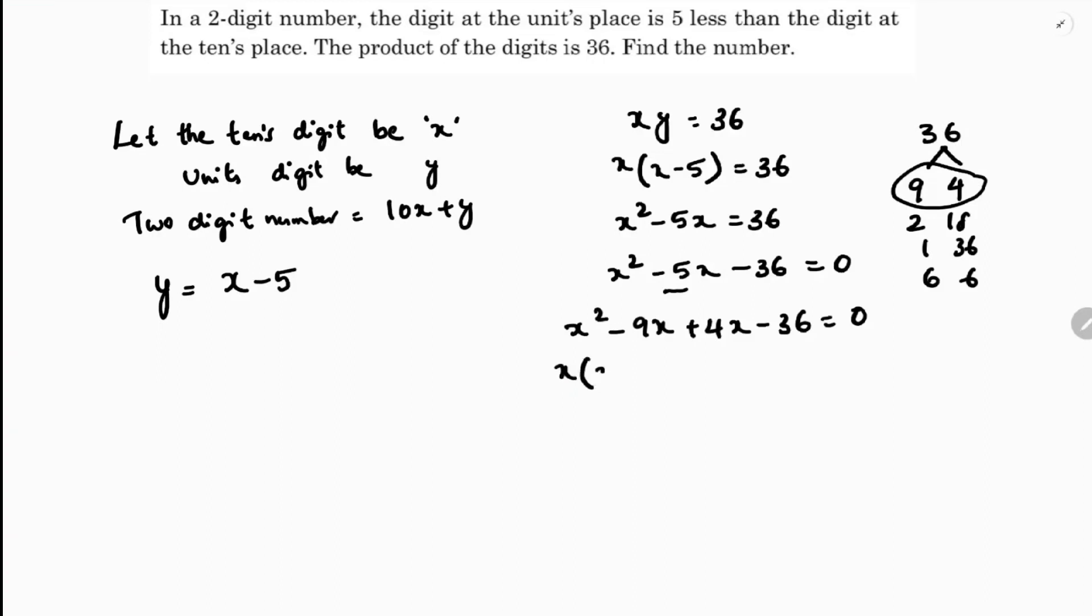If you take x common in the first two terms, x into x minus 9 plus 4 into x minus 9. x plus 4 equals 0, x minus 9 equals 0. So x equals 9, x equals minus 4.